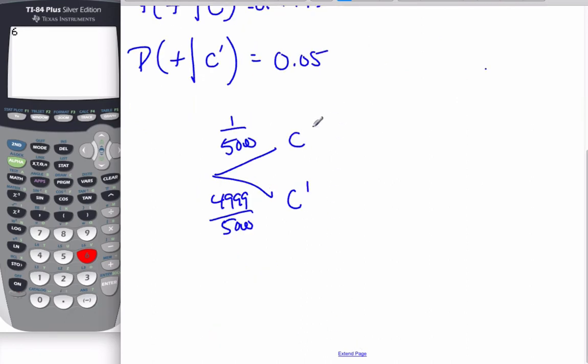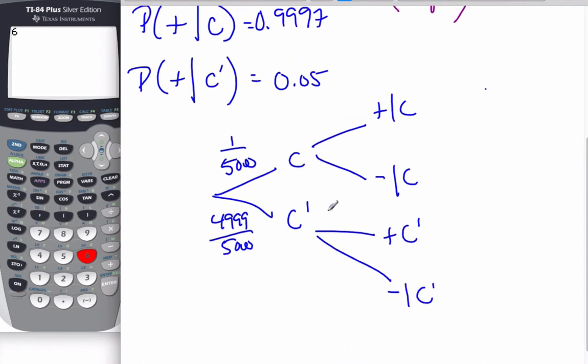Now, if I do have cancer, I could test positive given I have cancer. Or I could also test negative if I have cancer because this is the cancer branch. Similarly, I could test positive if I do not have cancer. Or I could test negative given I do not have cancer. And so from these numbers, I know that positive with, this is 0.05. So this is 0.95. This is 0.9997. So this is 0.0003.